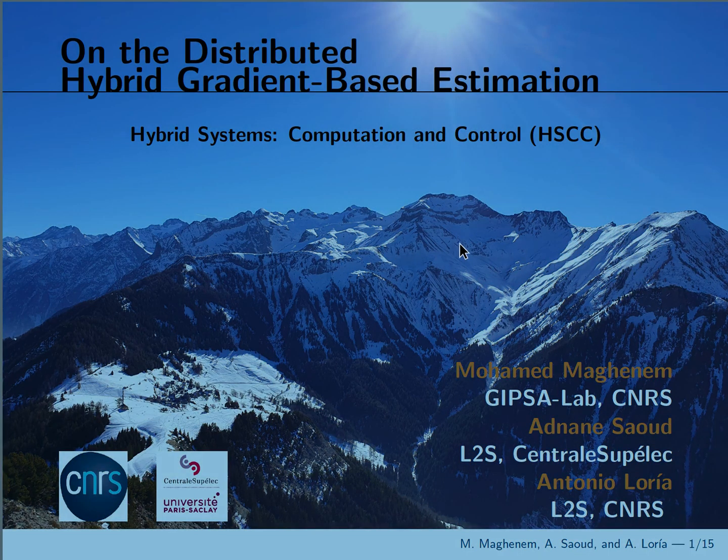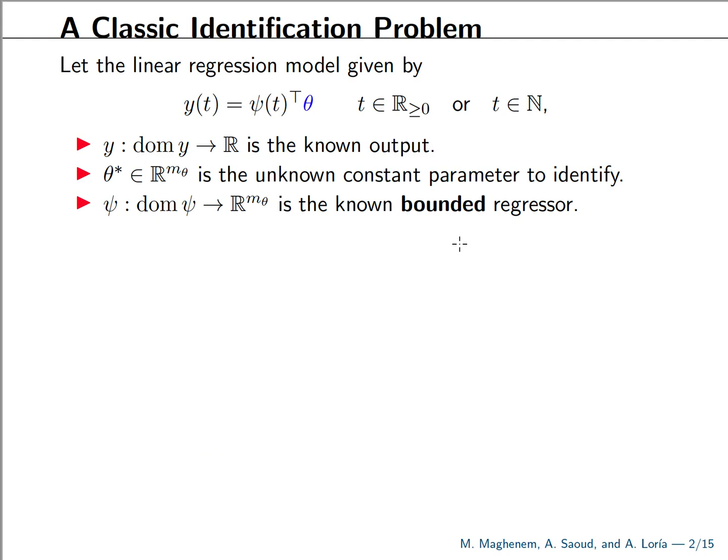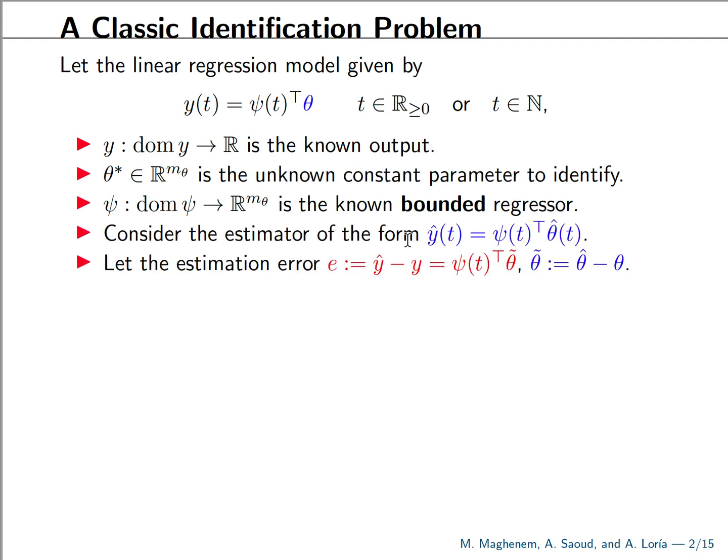I will start recalling a very classic identification problem in which we have a linear regression model where y is the output, psi is an input, or called regressor, and theta is an unknown parameter that we would like to estimate. Throughout this work, the regressor psi is assumed to be bounded. Here we can define a copy of our linear regression model that involves an estimate of the output, an estimate of the state, and uses the actual regressor signal.